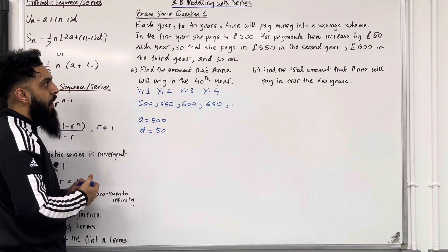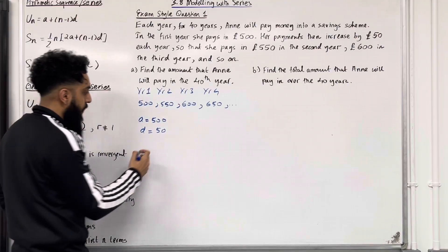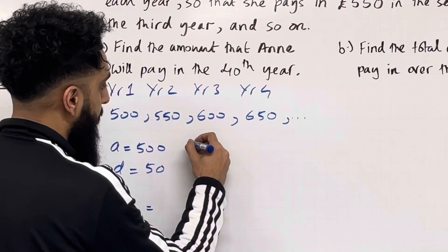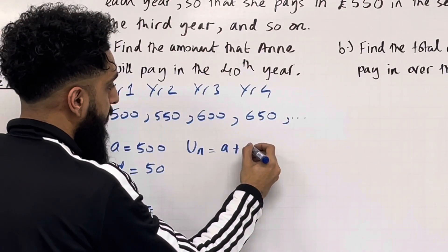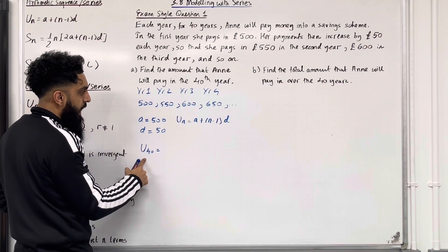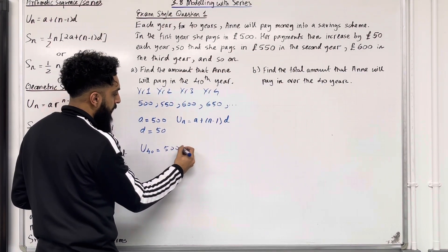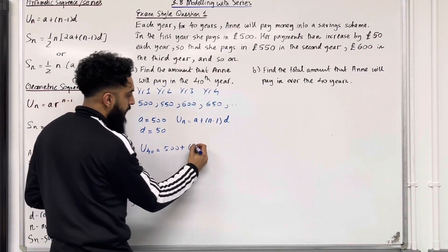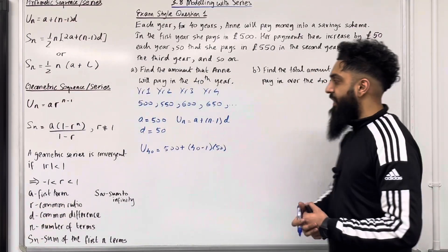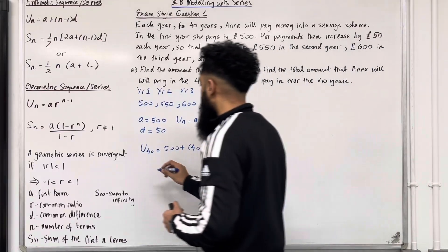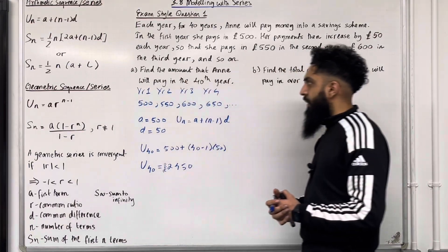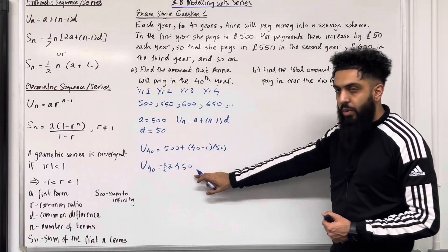In the question, we want to work out the amount that Anne will pay in the 40th year, so we're trying to calculate U₄₀. The nth term formula of an arithmetic sequence is given by Uₙ = A + (N − 1) × D. So we apply this formula: U₄₀ = 500 + (40 − 1) × 50. Putting this into the calculator, U₄₀ = £2,450. So the amount that Anne will pay in the 40th year is £2,450.